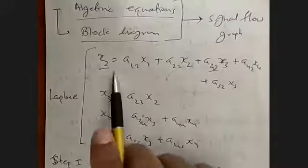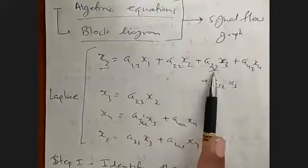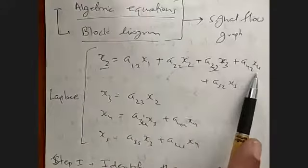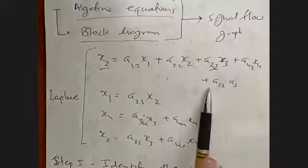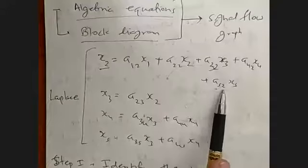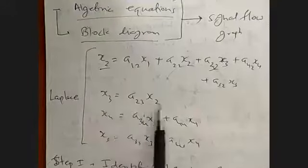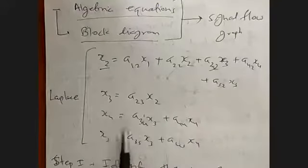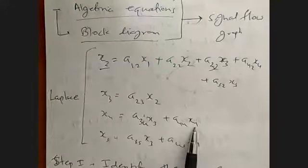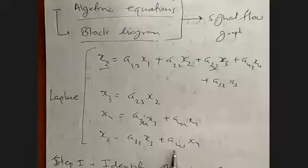We have considered these equations: x2 equals A12·x1 plus A22·x2 plus A32·x3 plus A42·x4 plus A52·x5, and x3 equals A23·x2, x4 equals A34·x3 plus A44·x4, and x5 equals A35·x3 plus A45·x4.